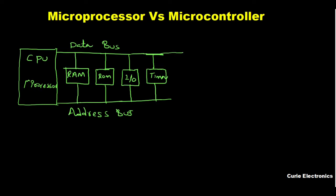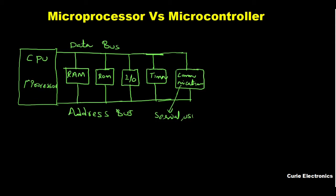Our computers are based on microprocessors. In a microprocessor, all memory, I/O, timer, and communication parts are externally added. We can choose whatever communication we need — whether serial, USB, I²C, or any other communication interface. This is how a microprocessor-based design works: a microprocessor is essentially just a CPU.